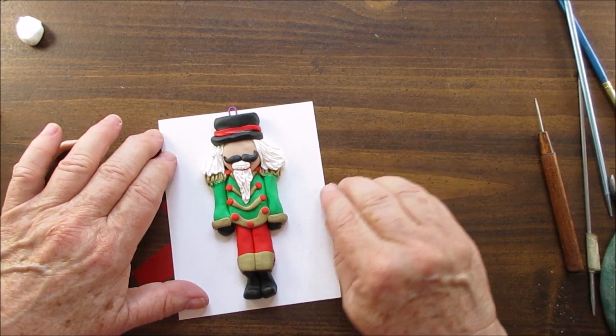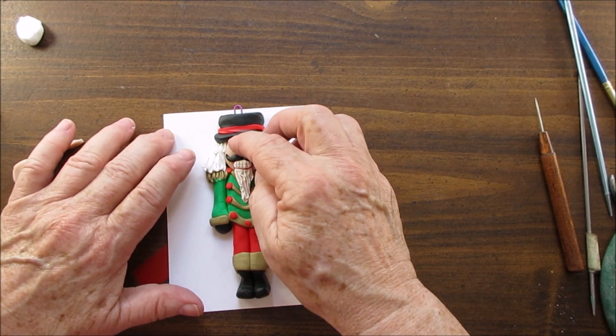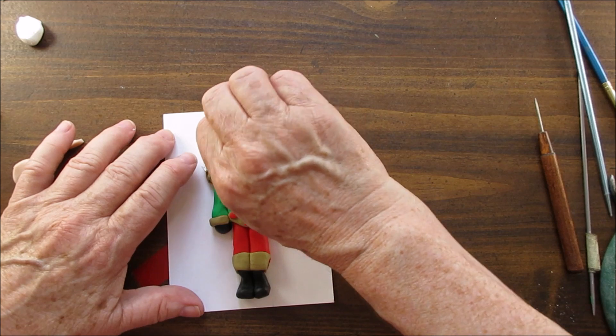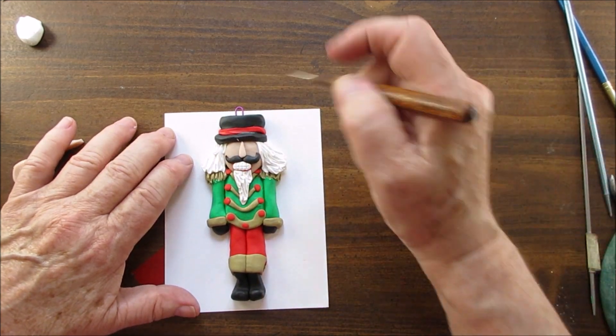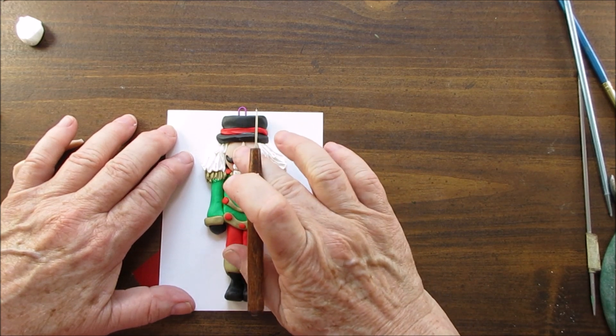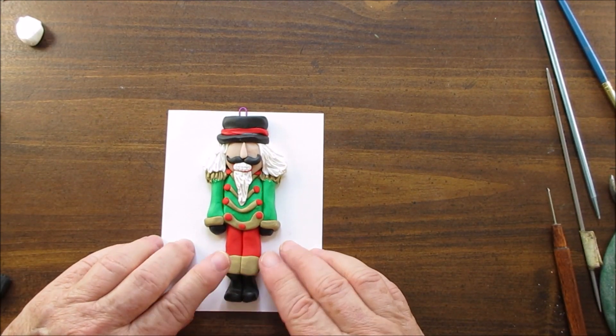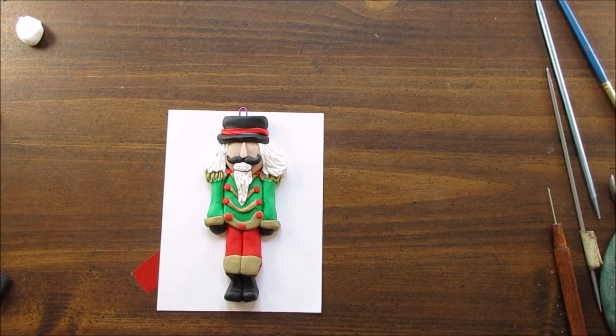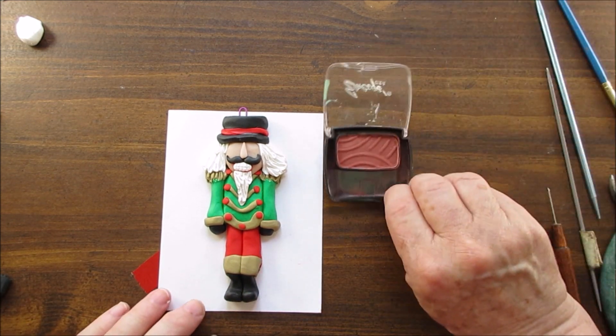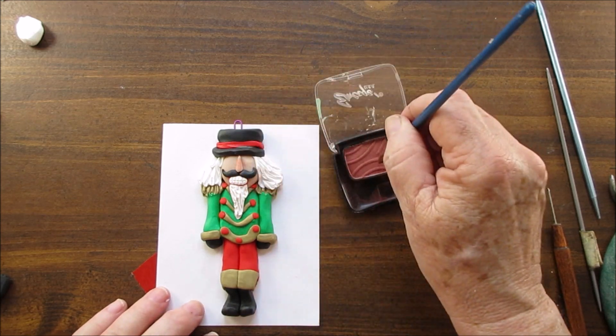His nose is just a teardrop shape and I'm putting it on. I'll be painting his eyes on. And before we do anything else we have to put the holly leaves and berries on. But first I'm going to blush before you bake.